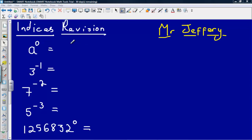Hello, final video on indices revision. Take a look at this one to begin with, a to the power of zero. Now anything to the power of zero, no matter what it is, is always going to be one. Really important thing to remember, this seems to come up quite a lot. So a to the power of zero just gives us one.